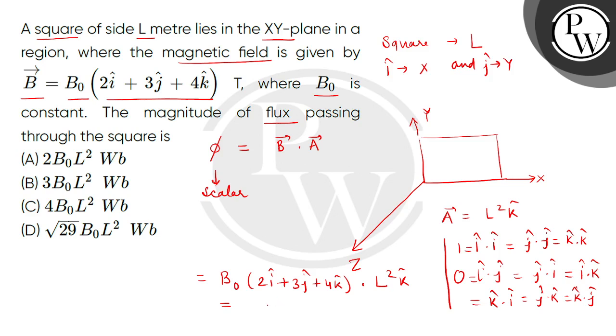This will be 4B₀L² and the SI unit is Weber. So the correct answer is option C. Thank you.